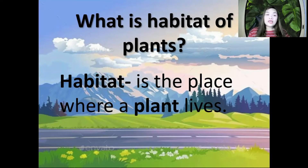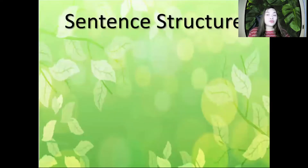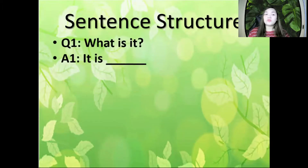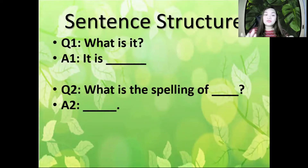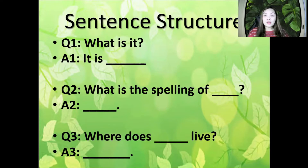Before I present the different kinds of habitats, let me share the sentence structures. The first one is: what is it? And you can answer: it is. I'm also going to ask: what is the spelling of? And the last question is: where does a plant live? You can answer with the different kinds of habitats. So if you're ready, let's start.